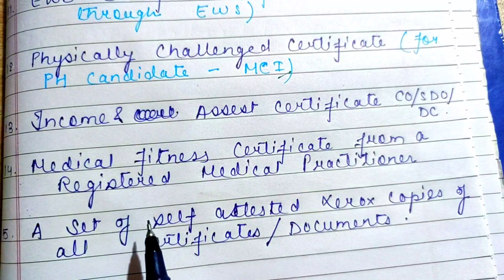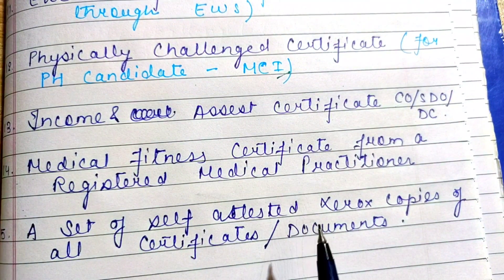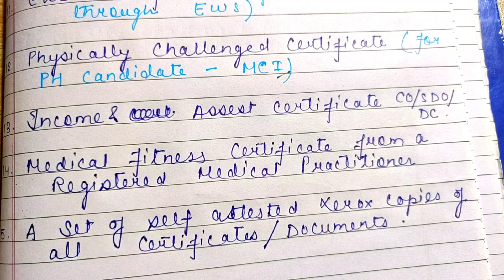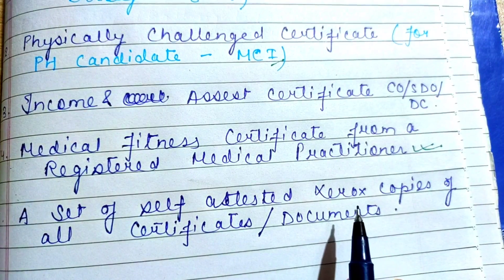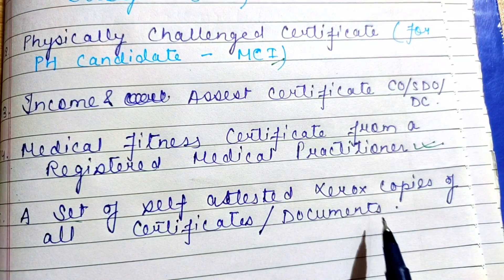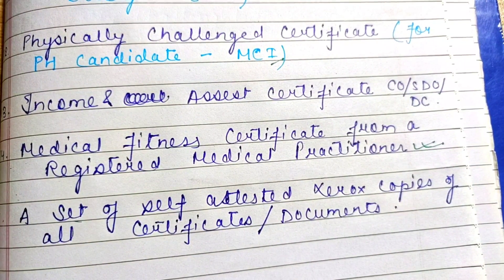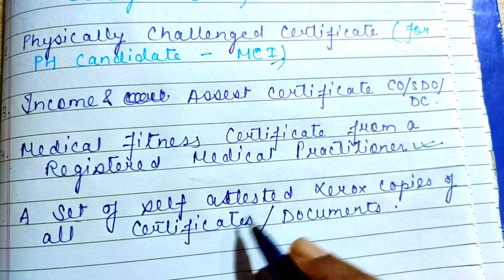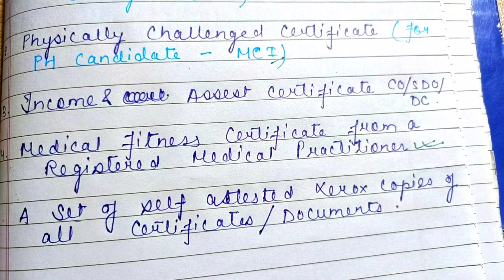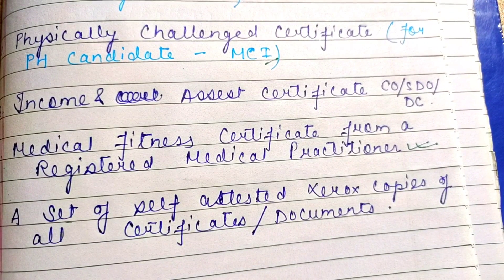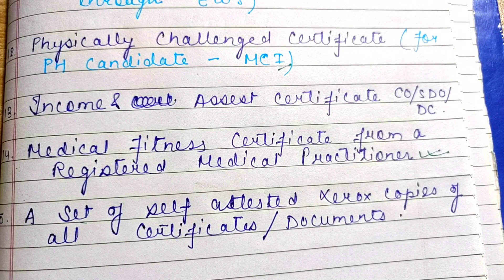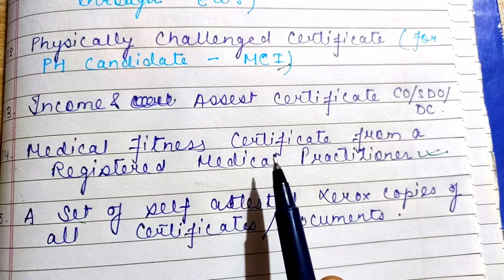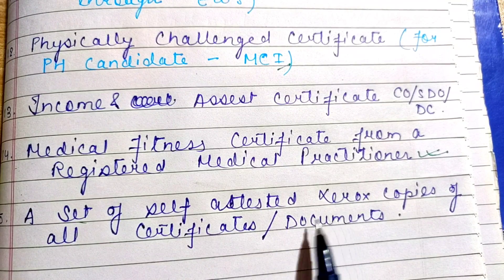You also need a Medical Fitness Certificate from a registered medical practitioner, which is submitted at the college during the admission process. Along with all these original documents, you must also bring a set of self-attested Xerox copies of every certificate. Self-attest means you sign each copy yourself in a corner of the page. So at counseling time you verify documents, and at admission time you submit them to the college, including the medical fitness certificate, with self-attested copies.